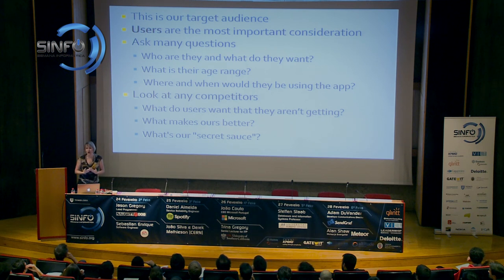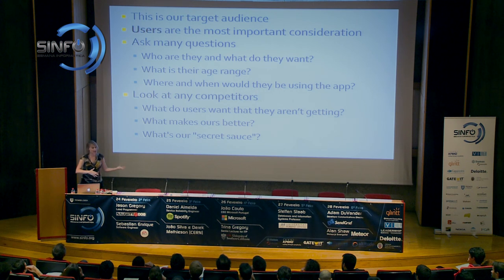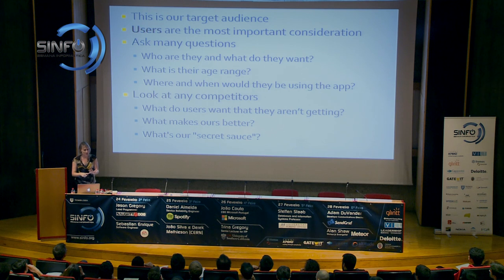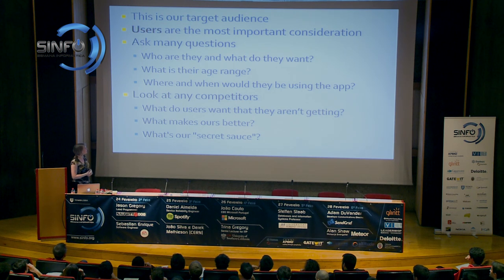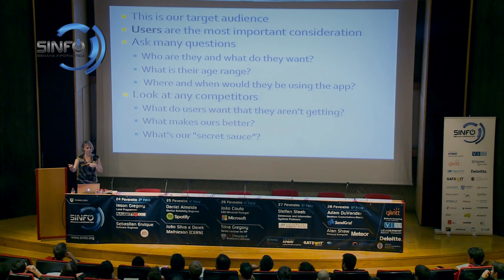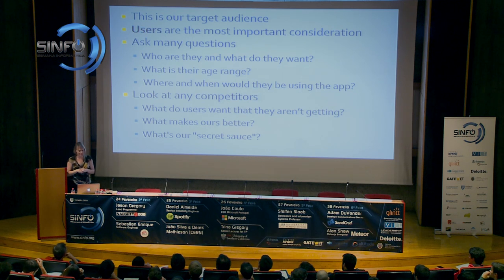For your user profile, we need to figure out who our target audience is — whether it might be an age range, a type of person, where they're located. Ask questions about who you think your target audience is and figure out your user profile. Remember, users are our most important consideration — they're the ones who will download your app and pay for it. We also want to look at our competitors: what other apps are out there similar to our idea, what are users not getting from them, and what would make ours special — our 'secret sauce'?